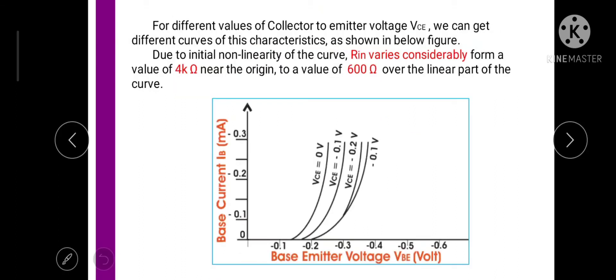If we take different values of collector to emitter voltage VCE then we can get different curves of this characteristics as shown in below figure. For example if we take the value of VCE equals to 0 volt then we can get this first curve. If we take the value of VCE equals to minus 0.1 volt we can take the second. For VCE equals to minus 0.2 volt we can take the third curve and so on we will take number of curves.